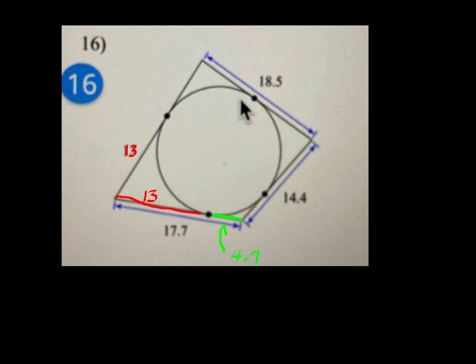Now, this line is also tangent, so a point to tangent, so this is equal distance to this side. This is also 4.7.